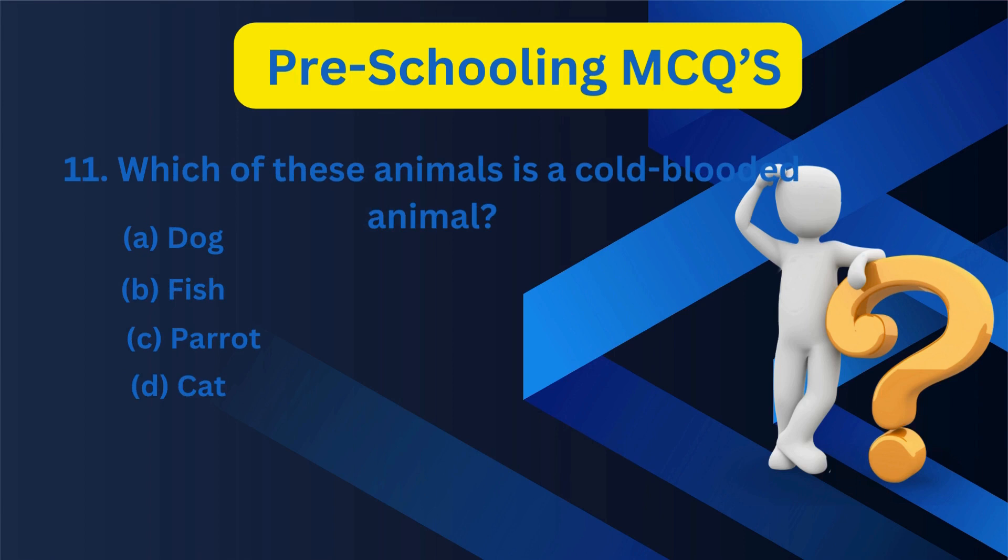11. Which of these animals is a cold-blooded animal? A. Dog, B. Fish, C. Parrot, D. Cat. B. Fish.